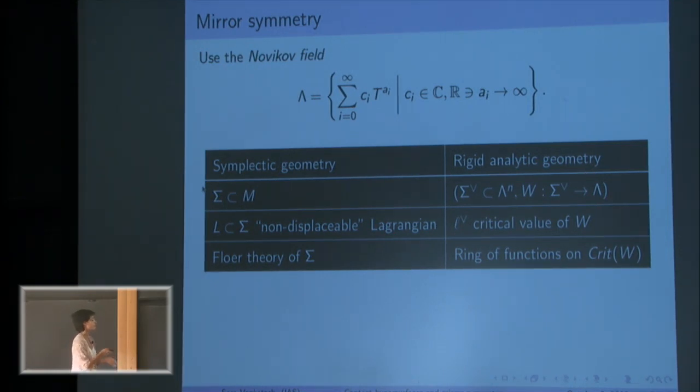So mirror symmetry is telling me I should think of these kind of interesting submanifolds as critical values. And finally mirror symmetry tells me that I should think of my Floer theory as being the ring of functions on my critical locus.